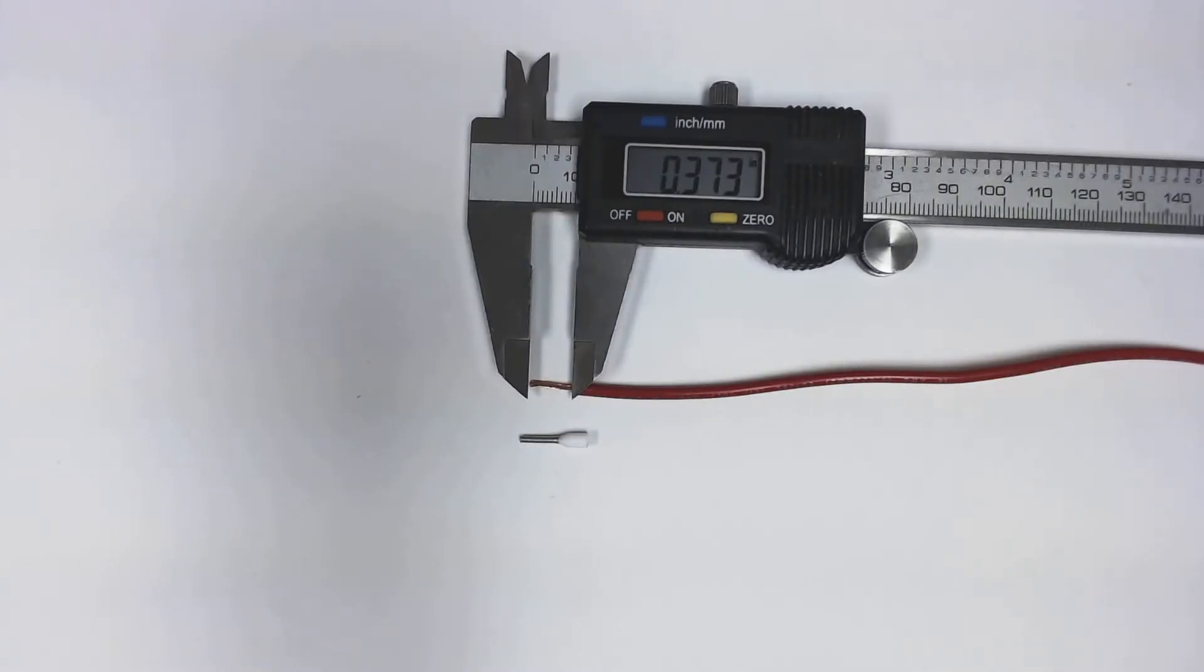The wire must be stripped back to the proper length before insertion into the ferrule. We recommend a strip length of 3 eighths of an inch, or .375. This translates to about 9.5 millimeters.